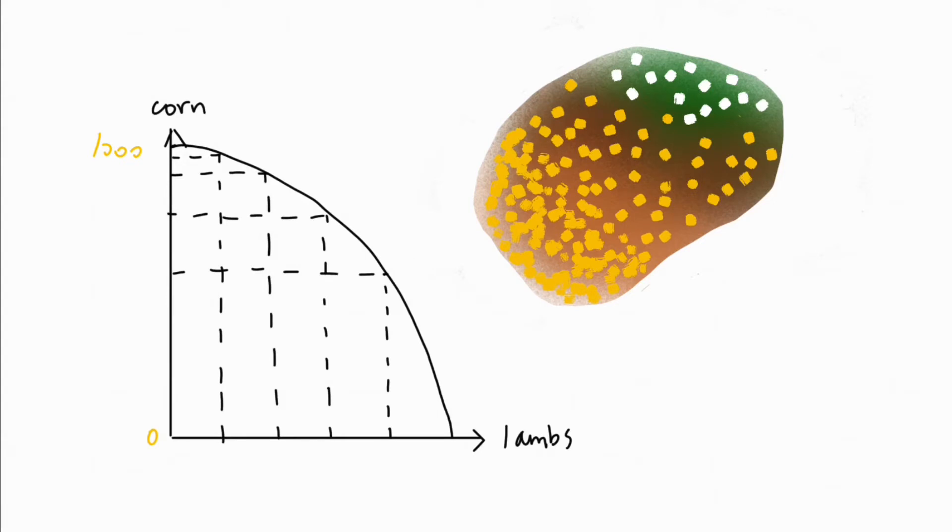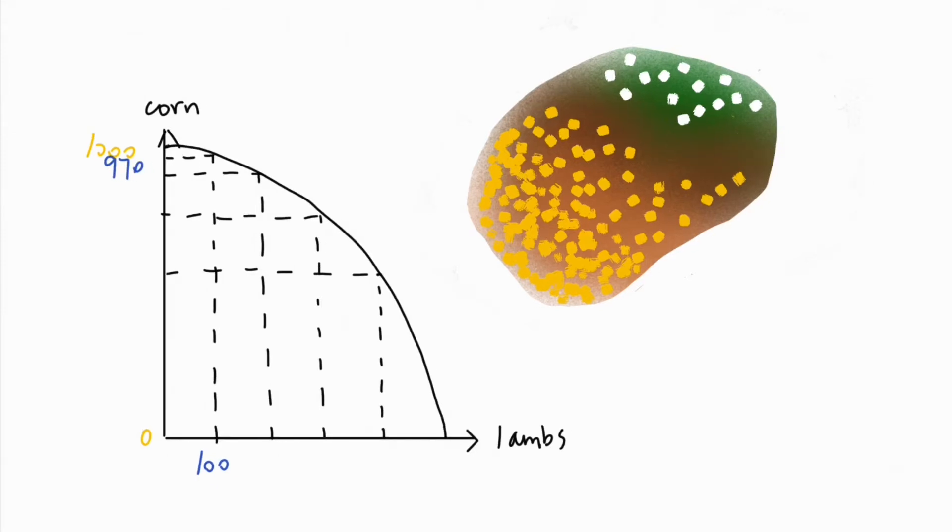And after this reallocation of resources, in exchange for 100 lambs, we gave up 30 units of corn. Now, what if we keep on increasing the lambs? So we're still using parts of the land where it's better for lambs than corn, trading 70 units of corn for 100 lambs, leaving us with 900 units of corn.